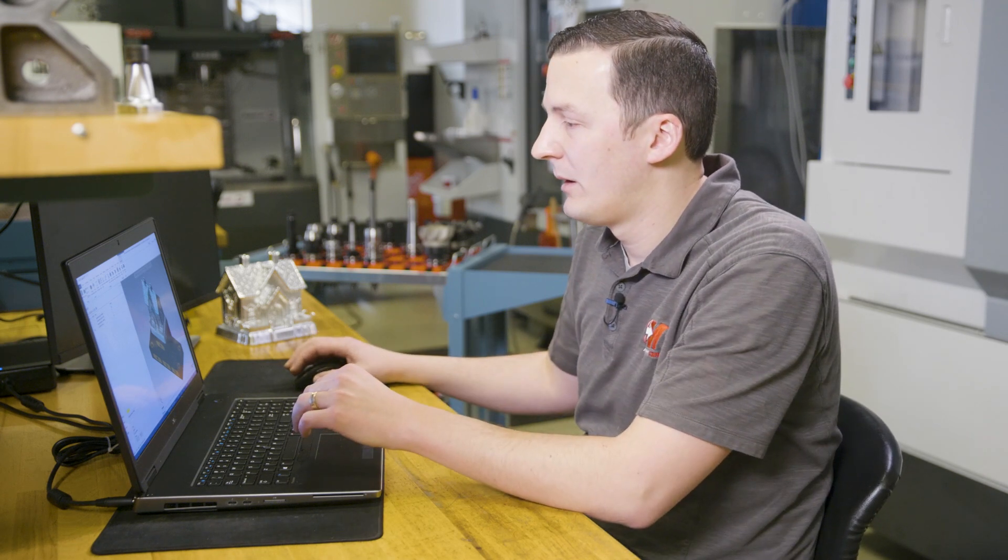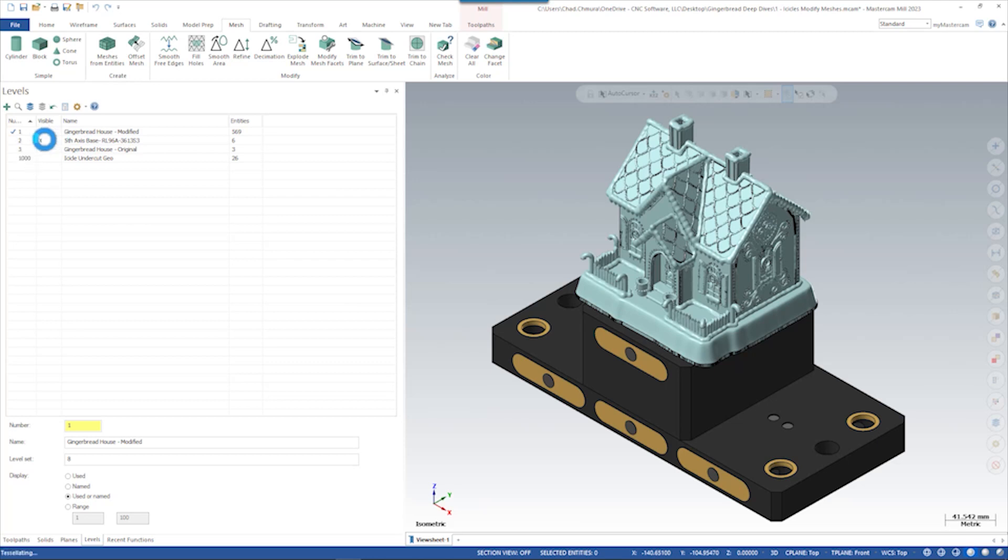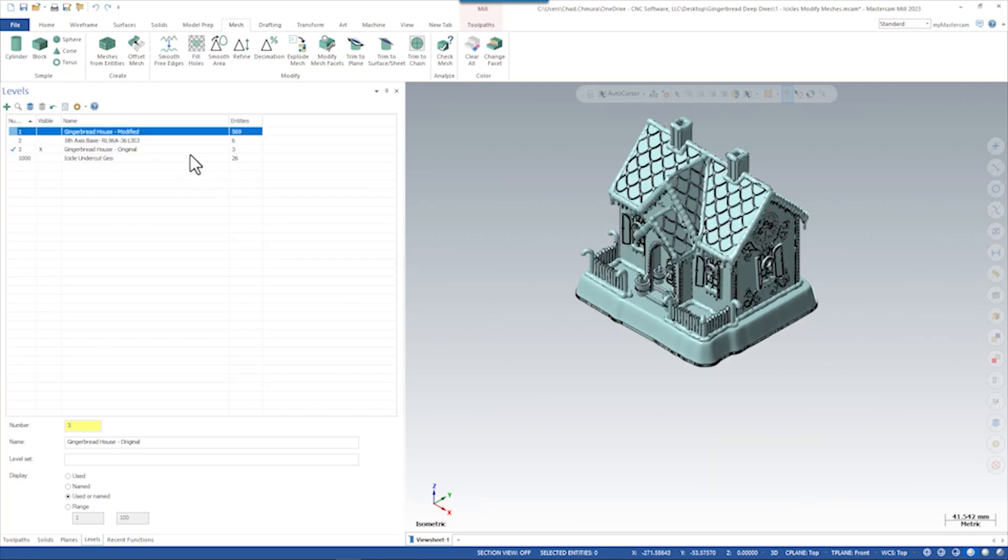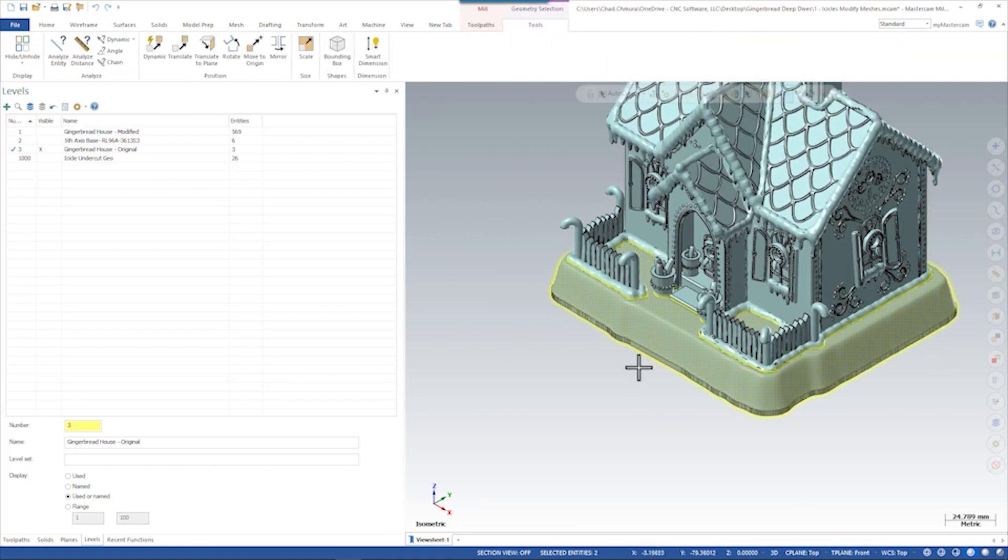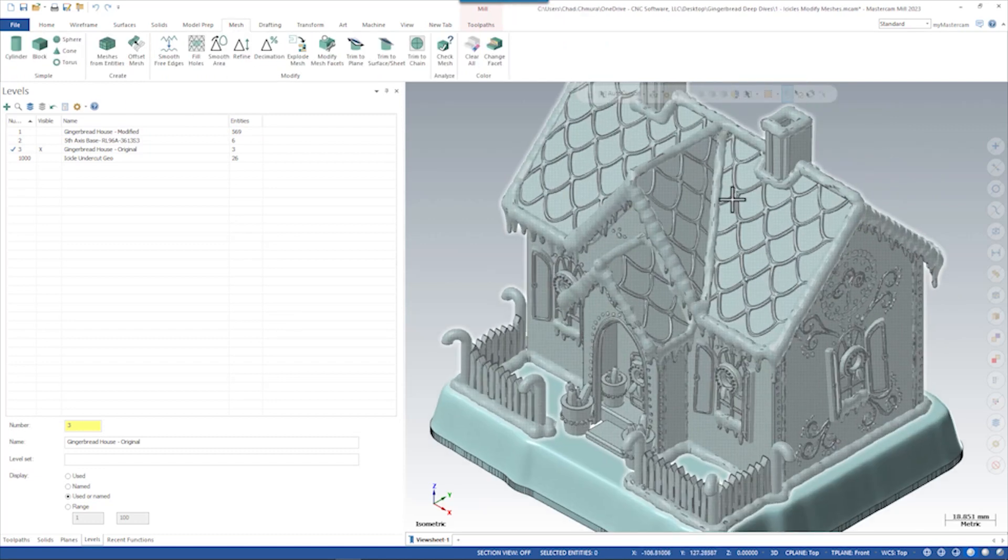The first thing we have to do here - if we turn on the original level with the mesh, you can see there are three entities on this level: the mesh as it came off the internet and two little base surfaces. What we want to do is break this mesh up into smaller individual bodies that are easier to work with.